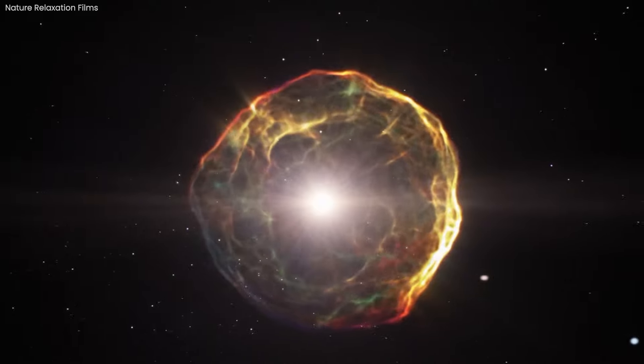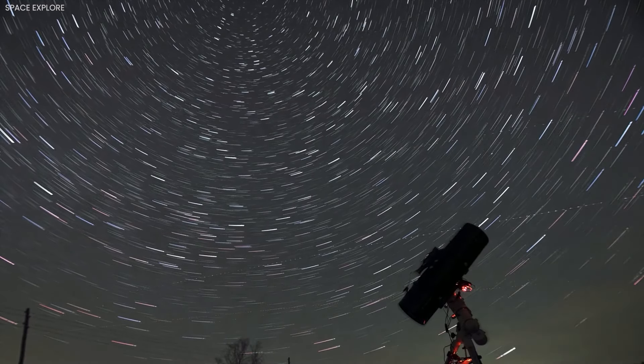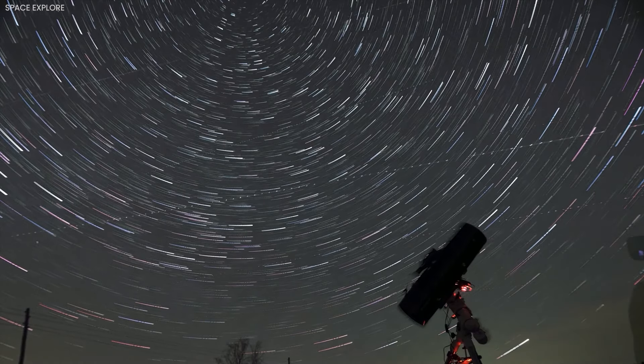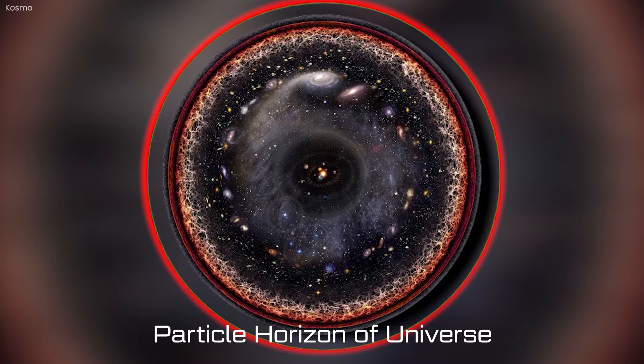Our universe is also governed by a set of physical laws and constants that determine how matter and energy behave. What most people would say is an edge of our universe is actually just the furthest distance where we can see. We call this particle horizon of universe.